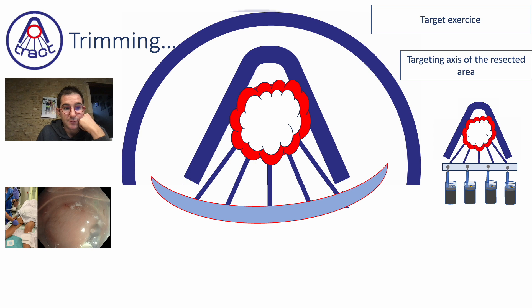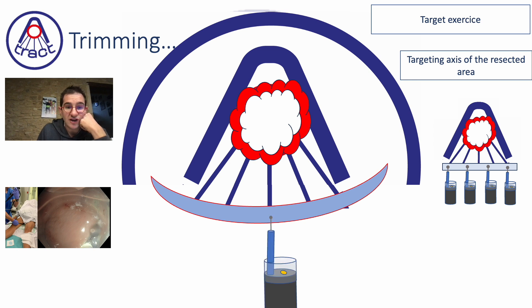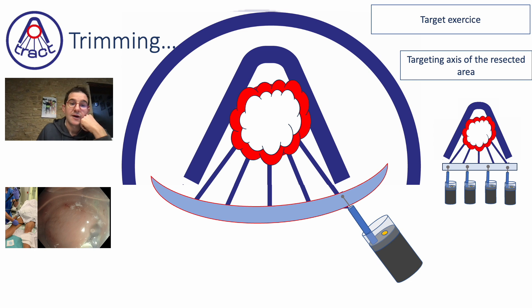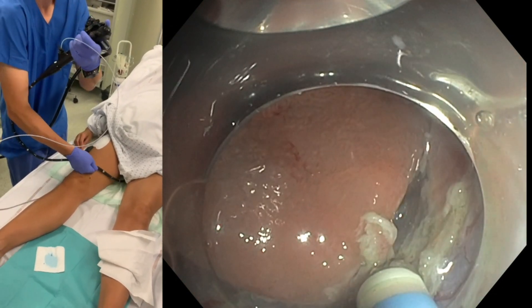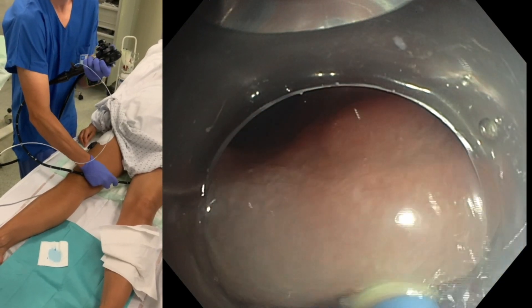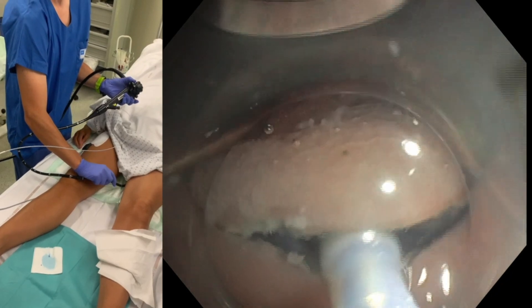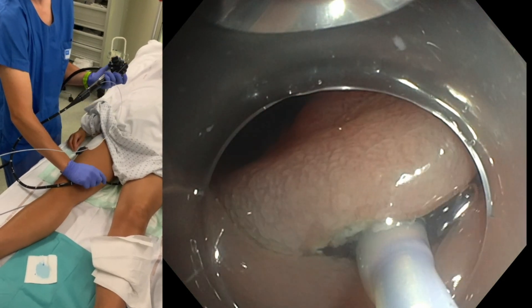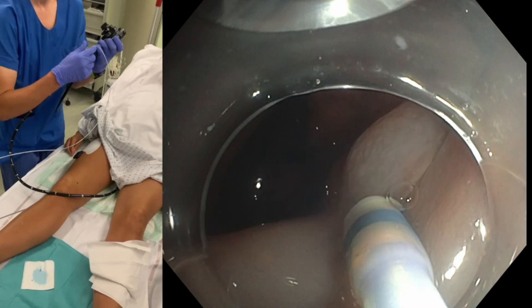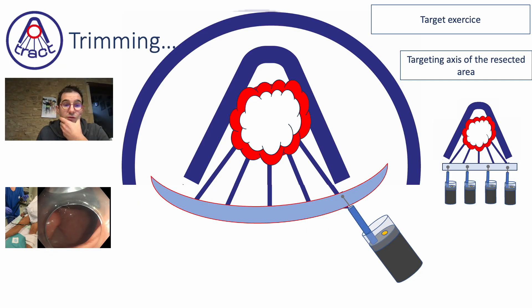The second important exercise is the target exercise. You always try to follow the center of your target, meaning you continually adjust the axis of your scope to do your trimming directed toward the center. It is a difficult movement requiring adjustments in multiple directions, but it is very important because your trimming and dissection will always be directed to the center of the lesion. Targeting the center consistently makes the resection faster.